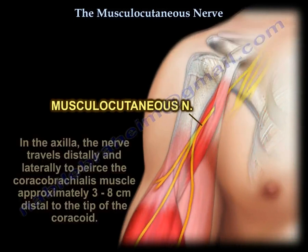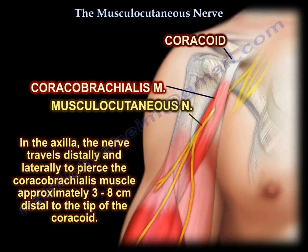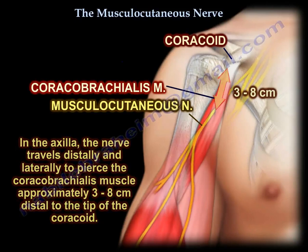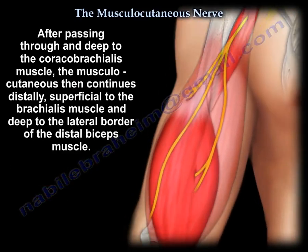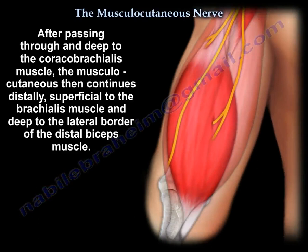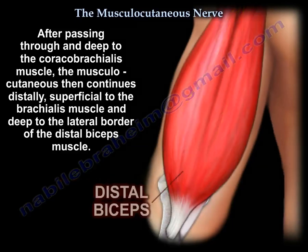The nerve travels distally and laterally to pierce the coracobrachialis muscle, approximately 3 to 8 cm distal to the tip of the coracoid. The nerve innervates the coracobrachialis muscle. After passing through and deep to this muscle, the nerve continues distally, superficial to the brachialis and deep to the lateral border of the biceps.